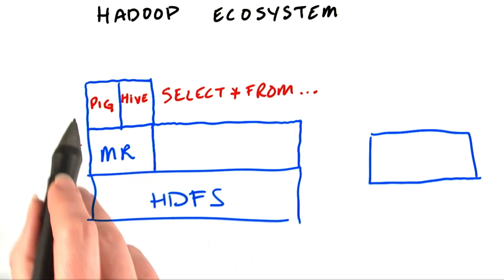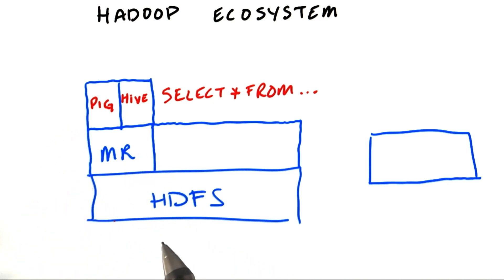And an alternative is Pig, which allows you to write code to analyze your data in a fairly simple scripting language rather than MapReduce. Again, the code is just turned into MapReduce and run on the cluster.